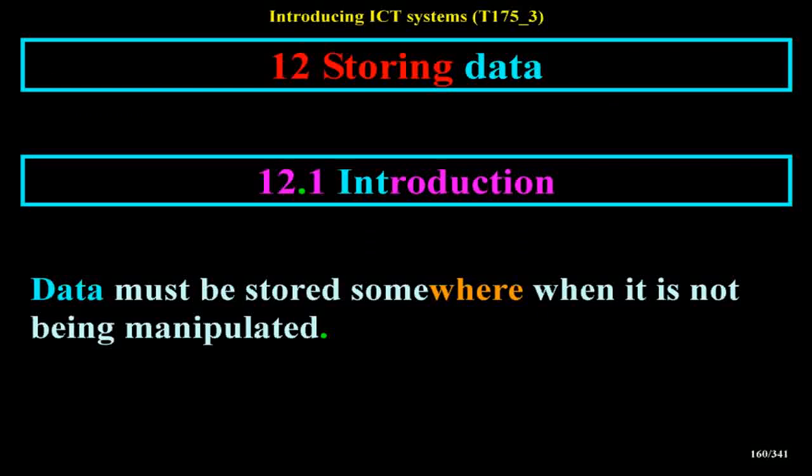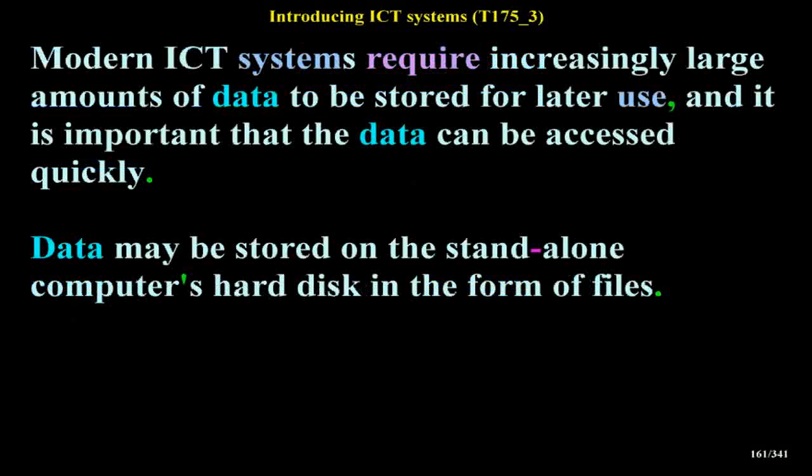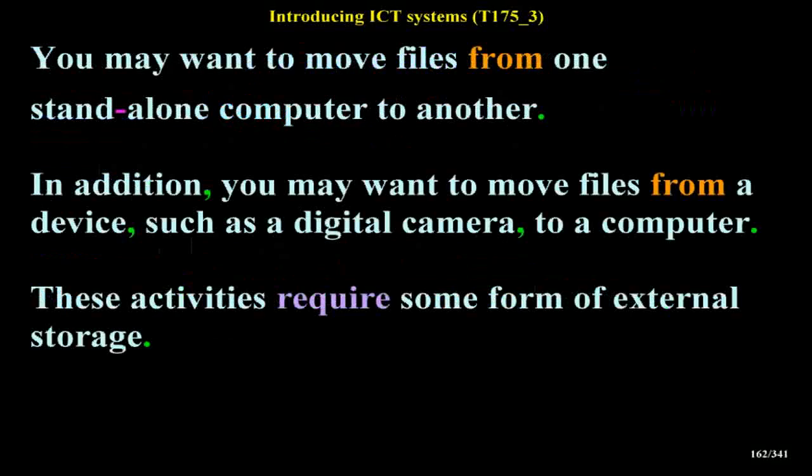Data must be stored somewhere when it is not being manipulated. Modern ICT systems require increasingly large amounts of data to be stored for later use, and it is important that the data can be accessed quickly. Data may be stored on the stand-alone computer's hard disk in the form of files. You may want to move files from one stand-alone computer to another, or from a device such as a digital camera to a computer — these activities require some form of external storage.